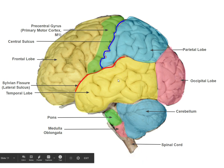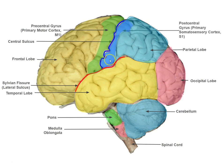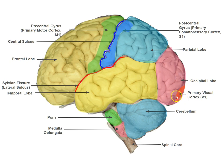Just behind the central sulcus — just caudal to it — is the postcentral gyrus, which is also primary somatosensory cortex, the first part of cortex that gets input about touch from the body. The most posterior part of the occipital lobe contains primary visual cortex. It actually extends pretty far onto the medial wall, as we'll see later. This is the first part of cortex that starts processing information about vision — information from the eyes.